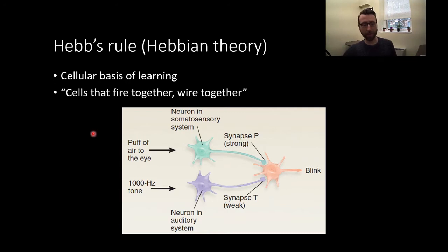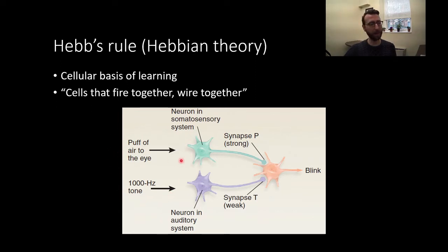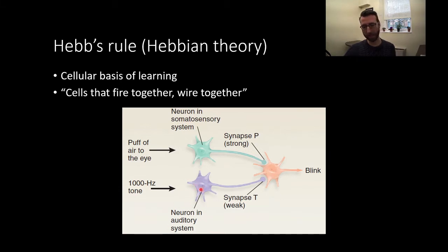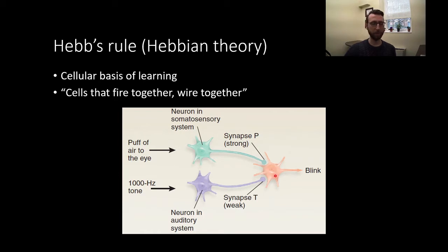Throughout this video we're going to use the example of eyeblink classical conditioning, a well-established paradigm in which animals learn that a 1000 Hz tone will predict the occurrence of a puff of air to the eye — an unpleasant but not harmful stimulus. Before any learning takes place, the auditory neuron — representing sound information — has a weak synapse with the motor neuron that governs the blink response. The somatosensory neuron, which detects the presence of an air puff around the eye, does have a strong synapse with the blink-producing motor neuron.